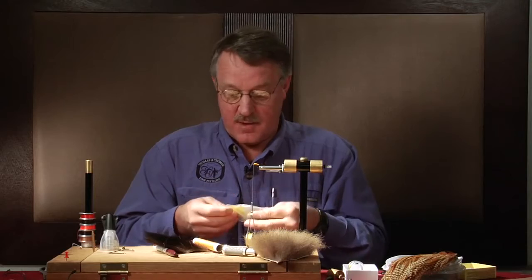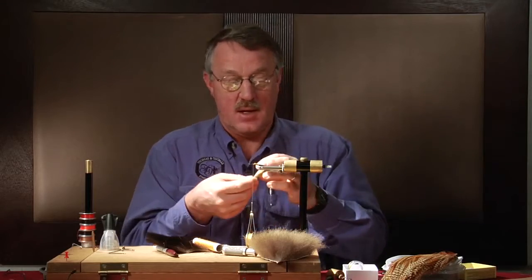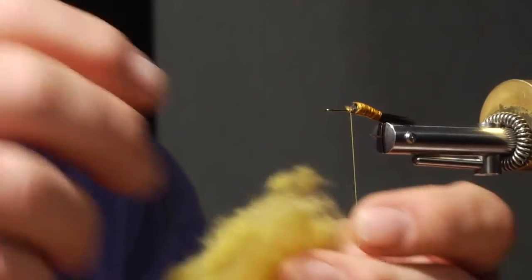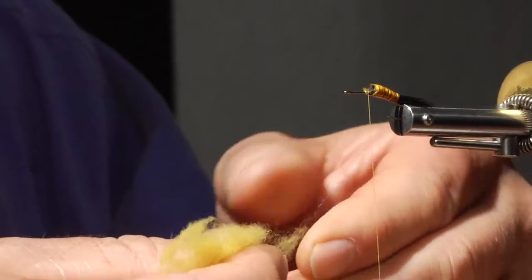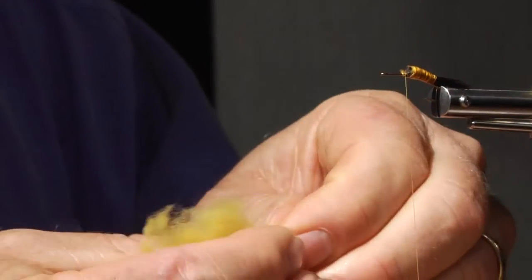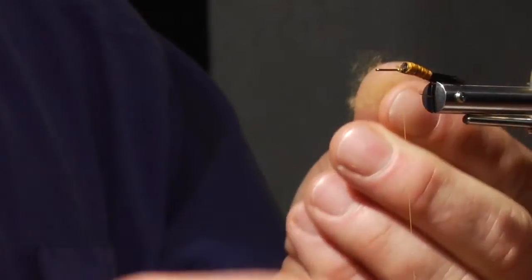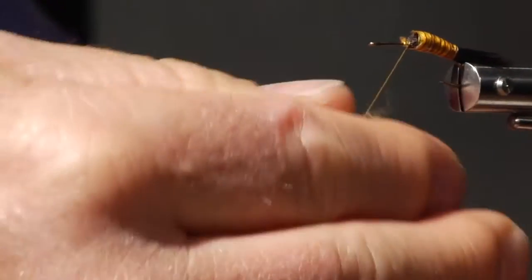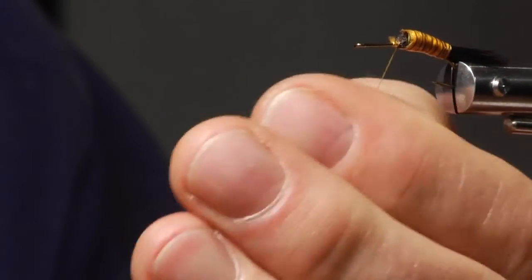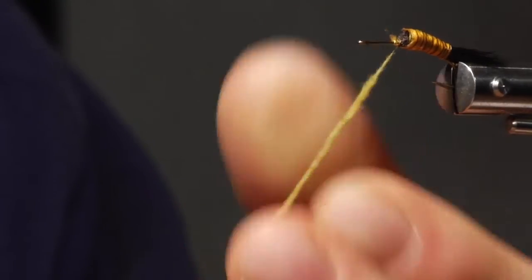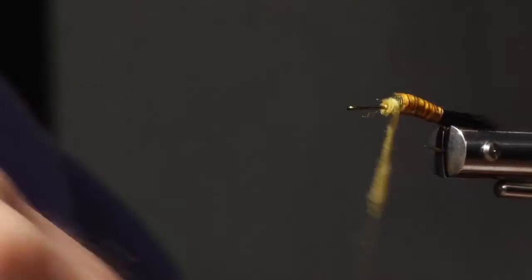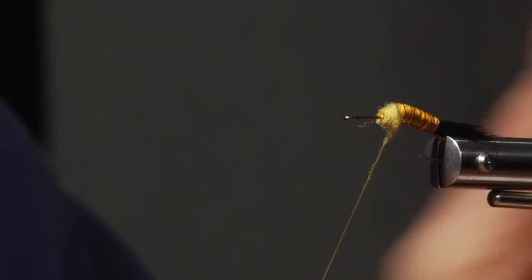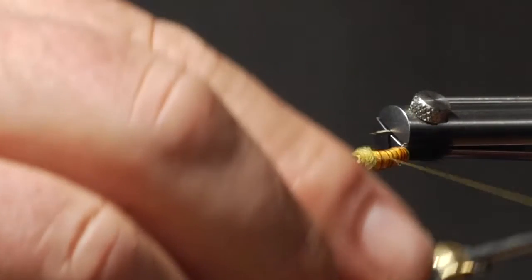While it's doing that, I can add my first bit of dubbing. And what this is, is light olive wool dubbing from Spirit River. Easily dubbed, nice material. And I'm just going to work this dubbing just in front of this body that I have made.